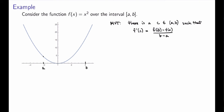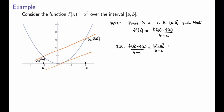Geometrically, I have two points (a, f(a)) and (b, f(b)) with a secant line through them. There must be a point c between a and b where the tangent line is exactly parallel to the secant line. We can calculate this precisely: the right-hand side is (f(b) − f(a)) / (b − a) = (b² − a²) / (b − a). Factoring gives (b − a)(b + a) / (b − a), and simplifying — since b ≠ a — gives b + a.